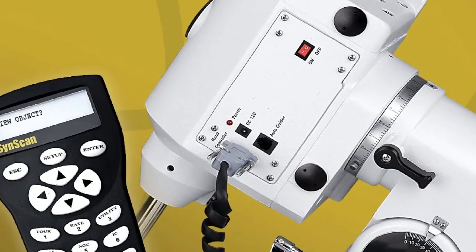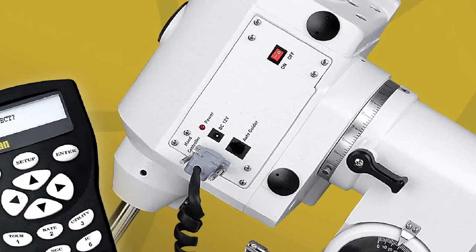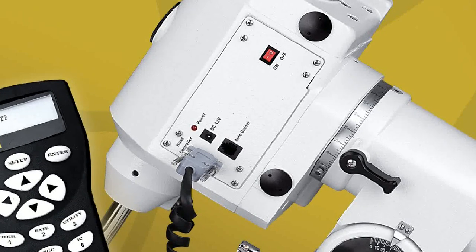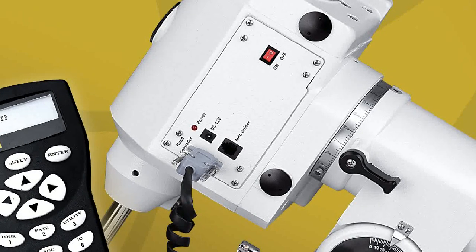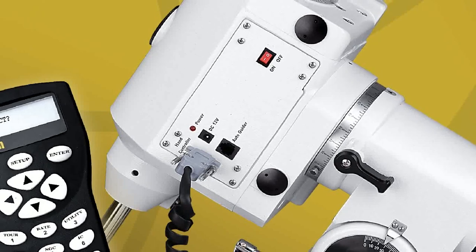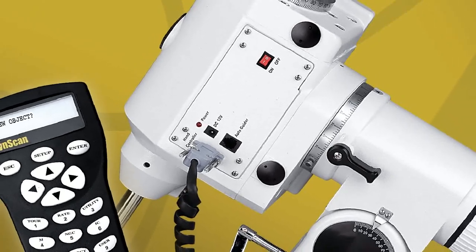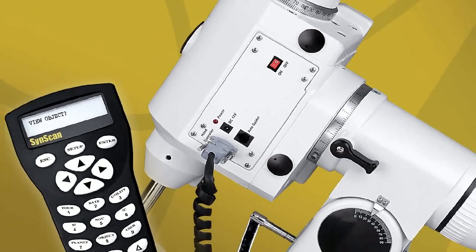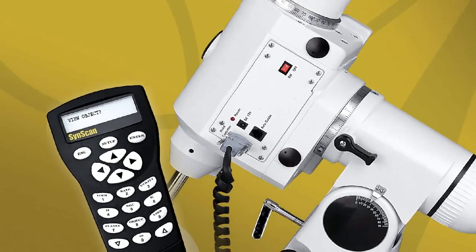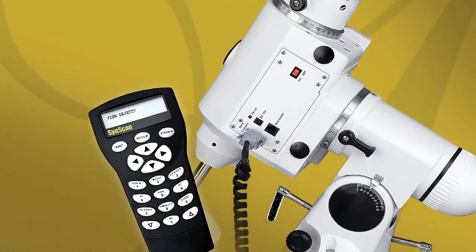SkyWatcher Pro Series Equatorial Mounts are outstanding for astrophotography. They feature a built-in auto-guider port, periodic error training and correction, and high precision gears and motors. These features facilitate precise tracking of targets through exposures of virtually any duration.